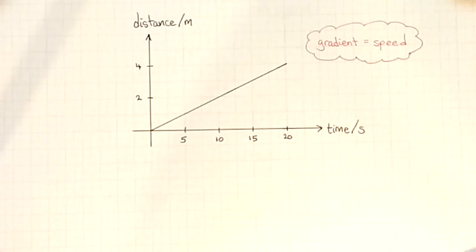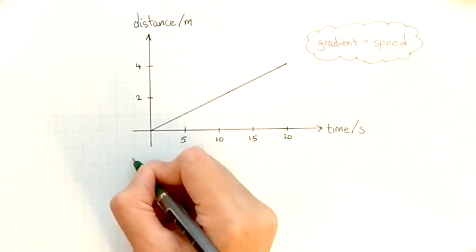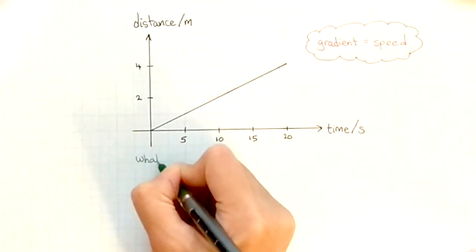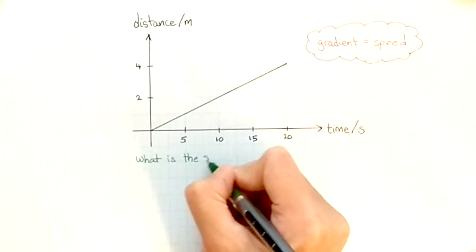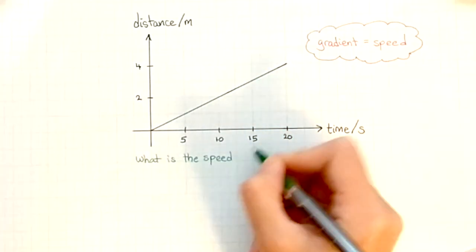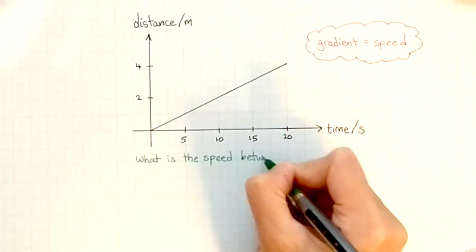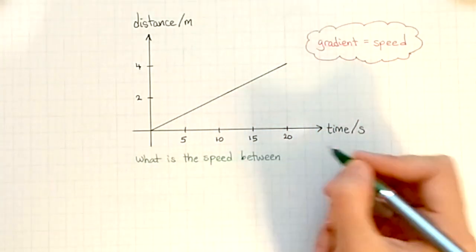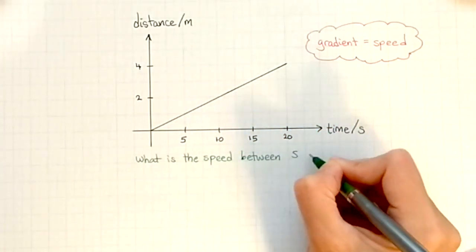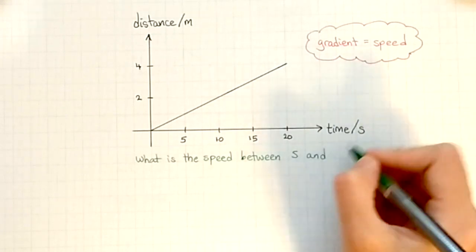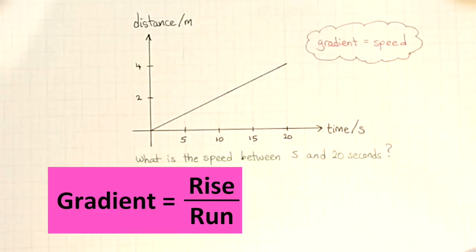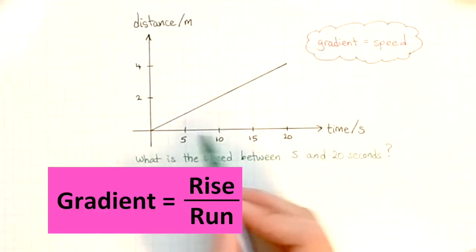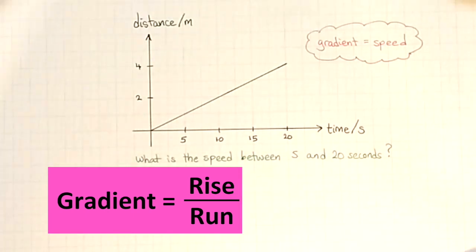The question now is: what is the speed of the object between 5 and 20 seconds? Think back to your lesson in math — you would have learned how to calculate a gradient. Remember, rise over run?